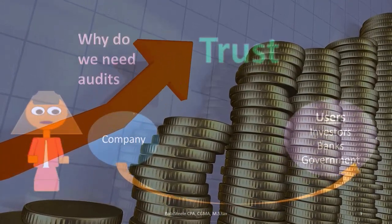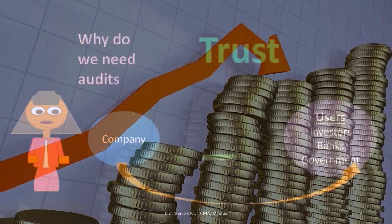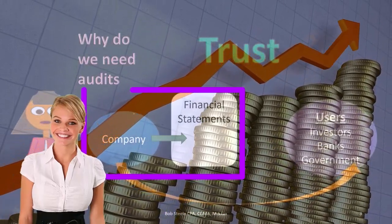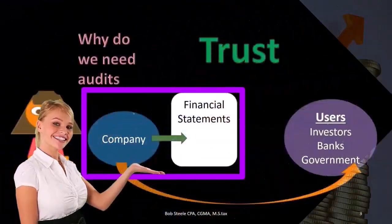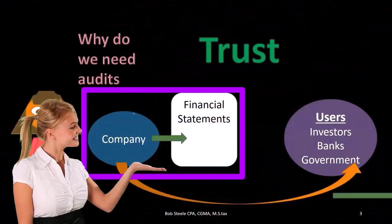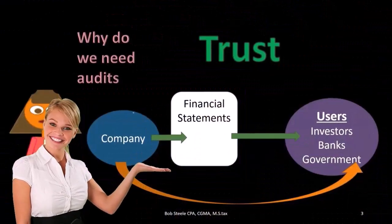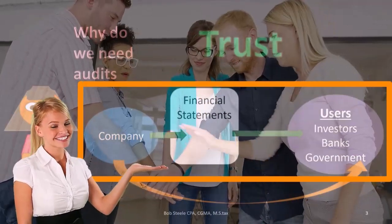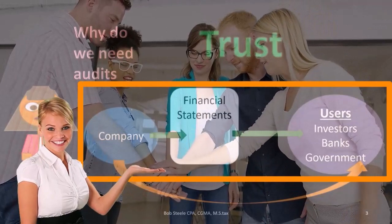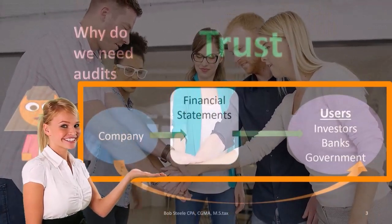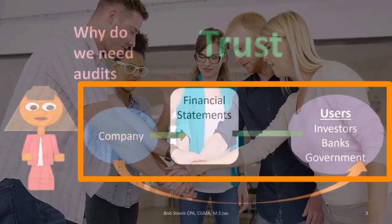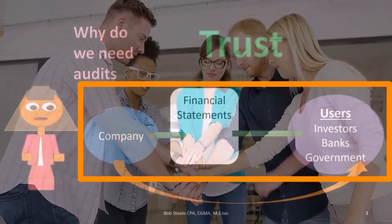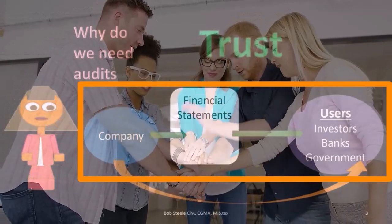Well, the investors, the bank, the government are going to ask for financial statements. They're going to say, hey, why don't you give us some financial statements? Tell us what your profitability is, tell us how you're doing. Then we're more likely to give you what we want — we can do business. The investors can put in money and invest, the banks could give the loan, and the government can process their taxes.